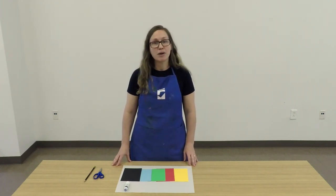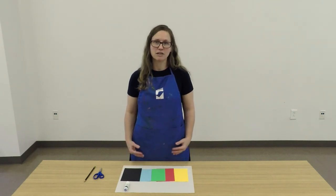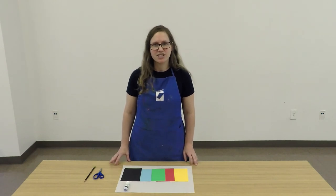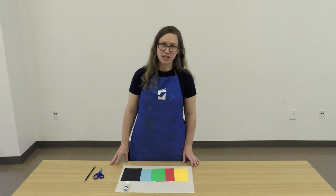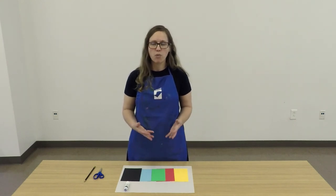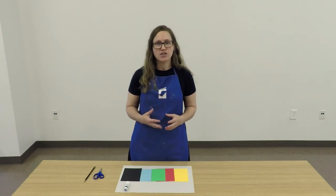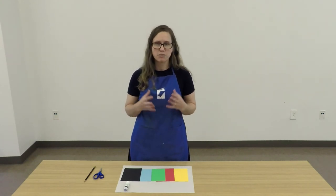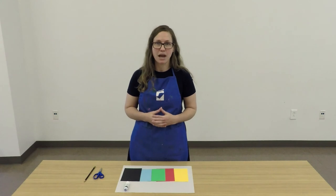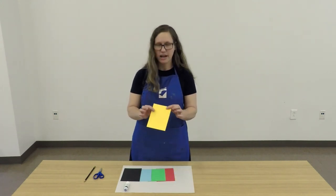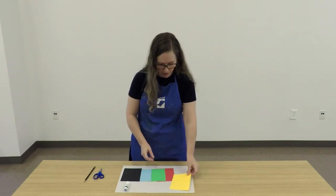The Kuna people in their molas primarily use subject matter like plants or animals. Today we're going to make a mola that's going to use a bird as the subject matter. I want to start by drawing my bird on one of the colors of sheets of paper, and the color that I choose is going to be the base of the animal. So it's going to be the main color of the animal or the plant. So start with a color that you want to be the main color. I chose yellow for this and I've drawn my bird right on the paper.